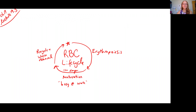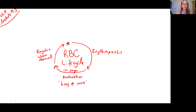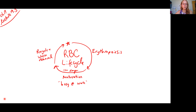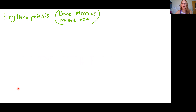Hi, Michelle Glass here. We're still talking about our red blood cells, picking up with the life cycle of red blood cells. We're going to talk about how red blood cells are formed, how long they do their job — about 120 days — and how the body recycles and removes waste from old worn-out red blood cells. Another name for red blood cells is erythrocyte, so the process of making new red blood cells is called erythropoiesis.